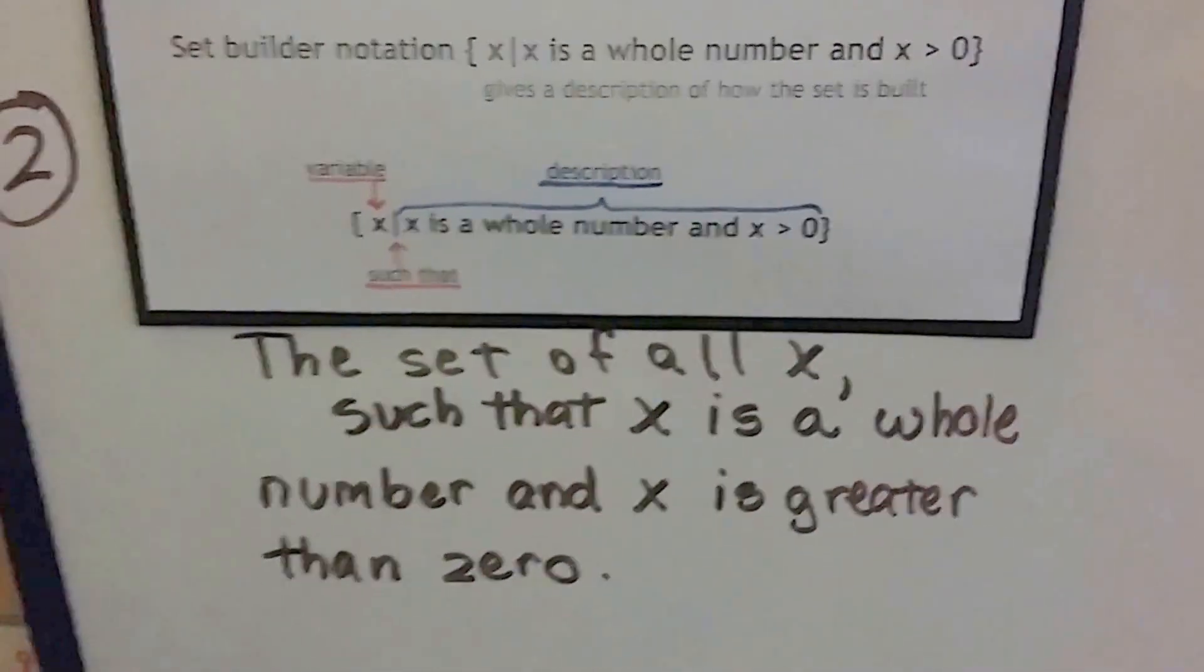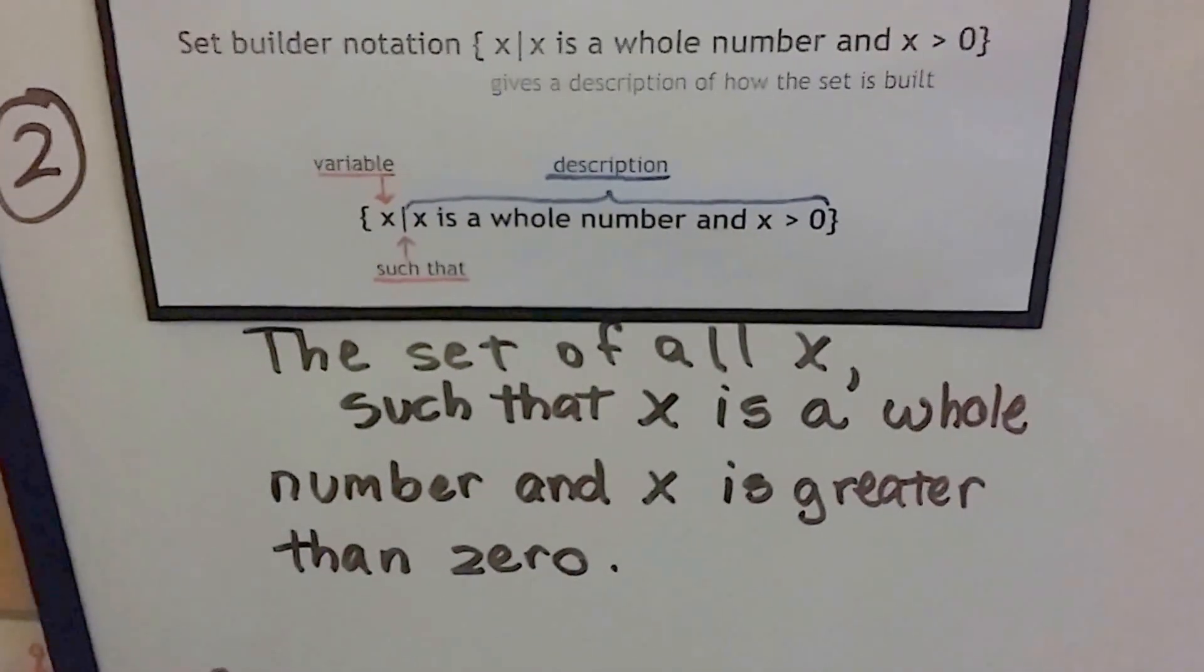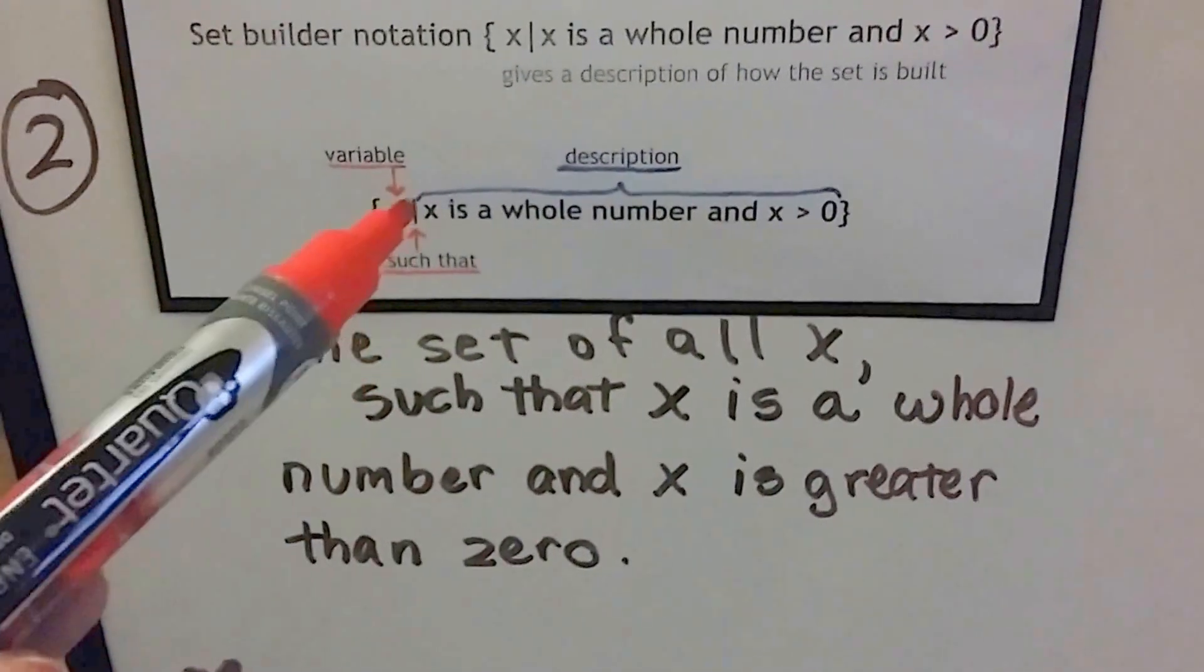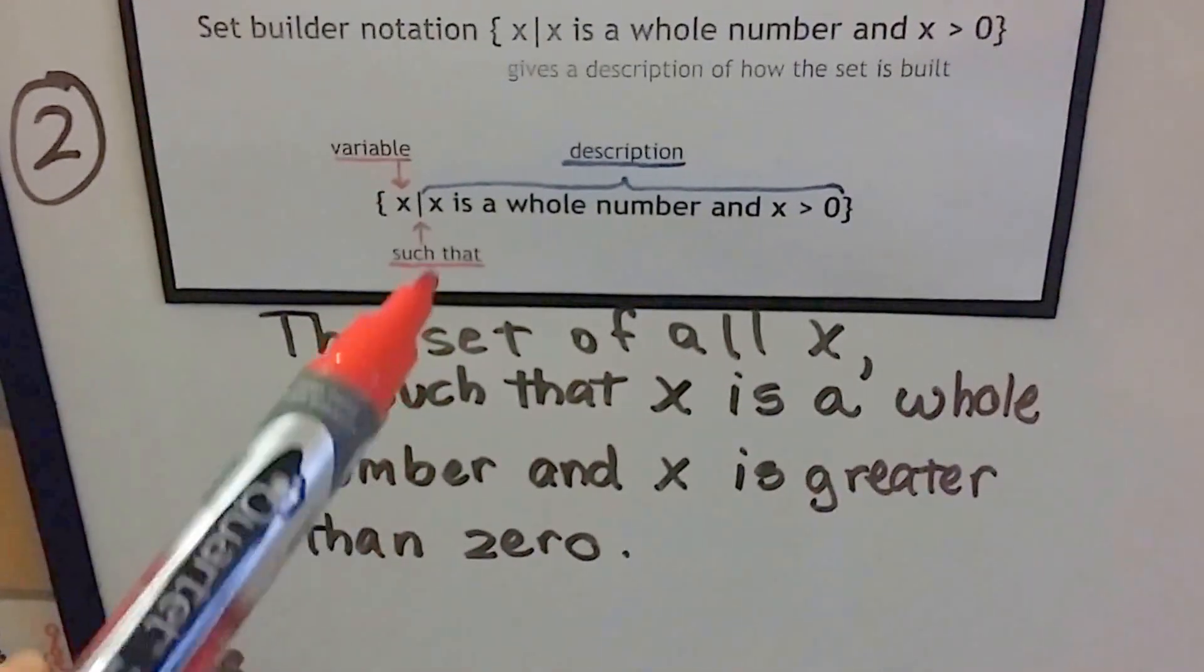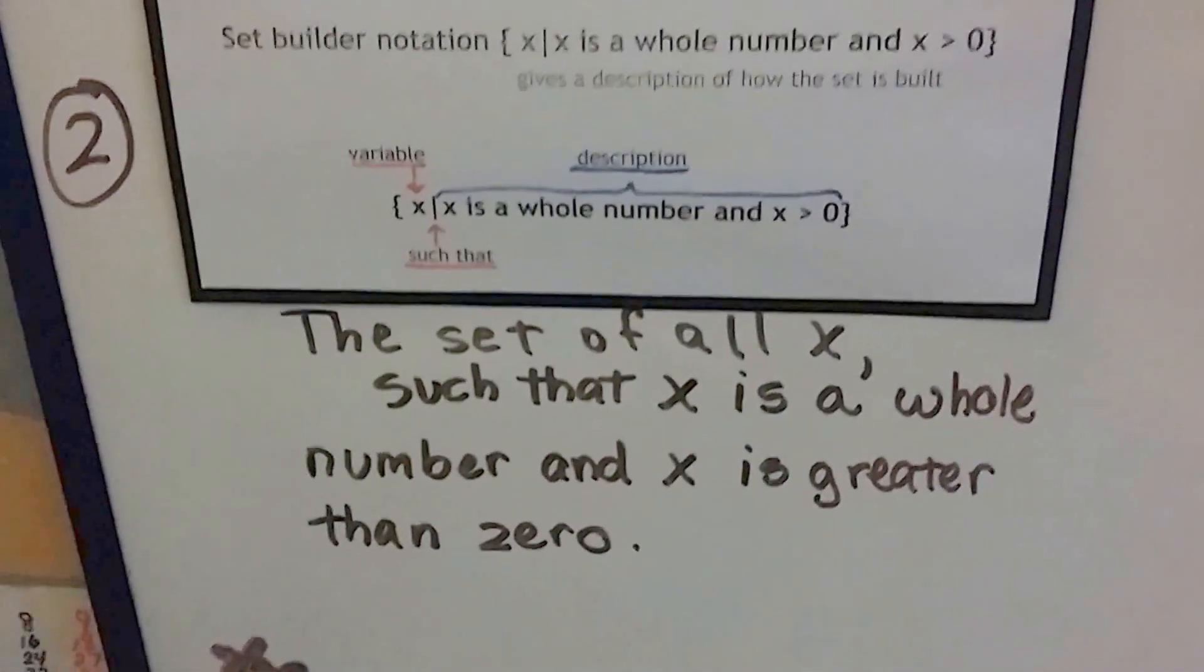The way we would read this is the set of all x, that's what this little x up here is, such that, that's the bar, x, that's the second x, is a whole number and x is greater than 0.